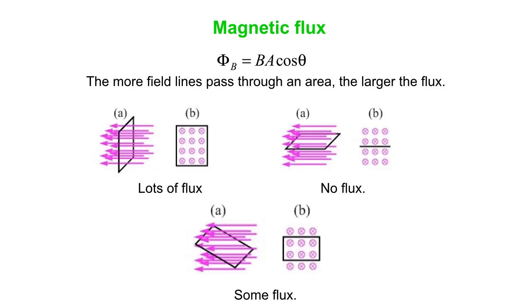Okay, so here's flux. And pictorially, here we have an area. It could be like a sheet of paper. And in the top left picture, we've got lots of field lines passing through that area. In other words, lots of flux.